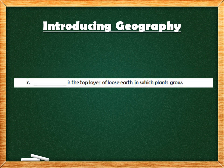Question 7: blank is the top layer of loose Earth in which plants grow. The answer is soil — S-O-I-L.